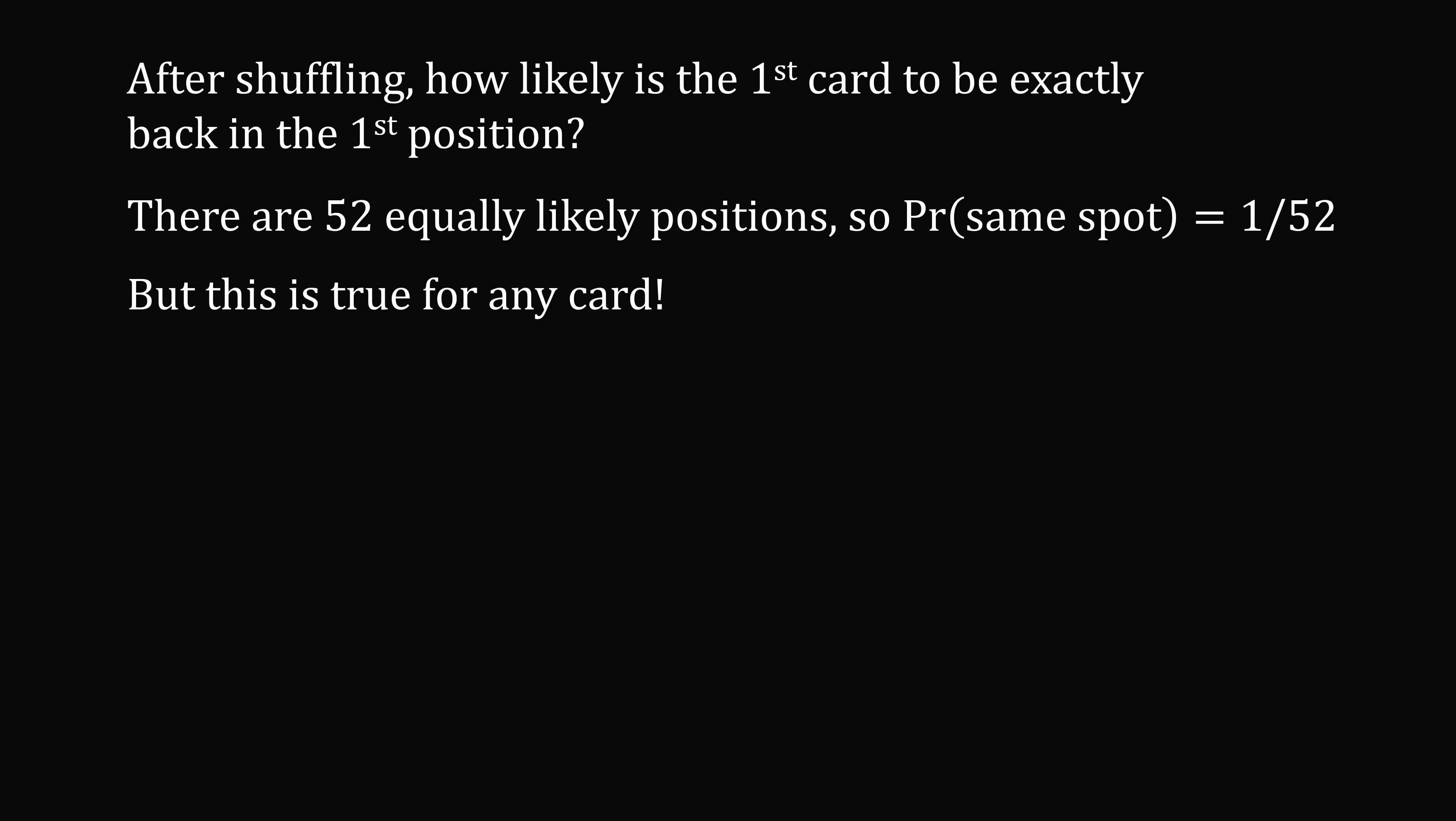But this is true for each card, the second card, the third card, and so on. So let Xk be a random variable that's equal to 1 if the kth card is in the same spot. That happens with probability 1 over 52. And let it be equal to 0 otherwise. So we will calculate the expected value of Xk. This is equal to 1 multiplied by 1 over 52, which equals 1 over 52.